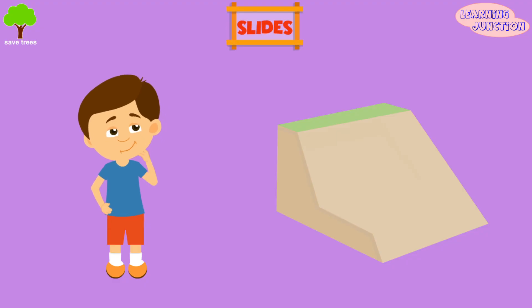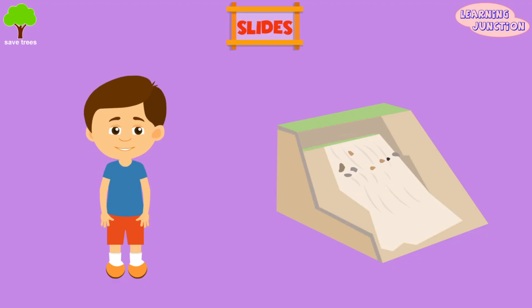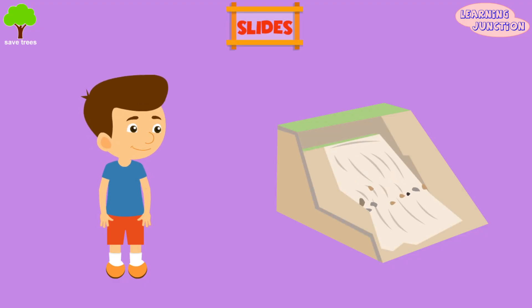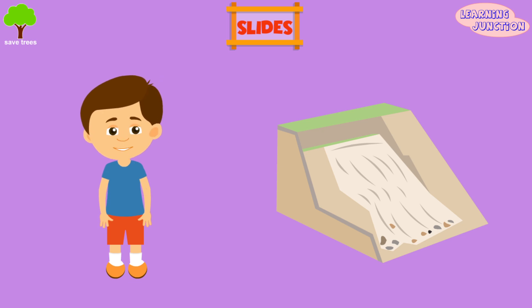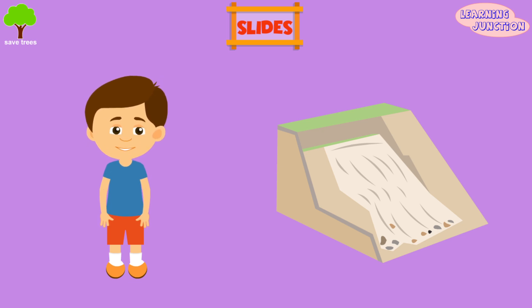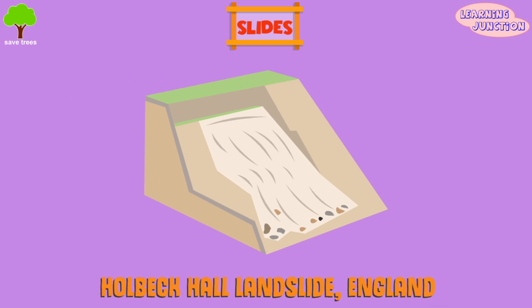Slides: in this kind of landslide, the unstable sliding material breaks away from the underlying stable material. For example, the Holbeck Hall Landslide in England.